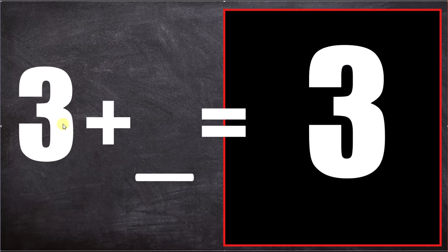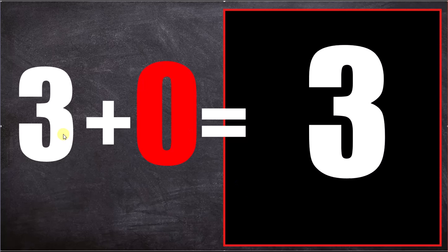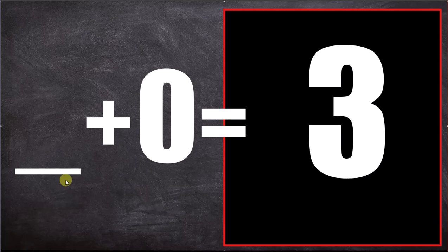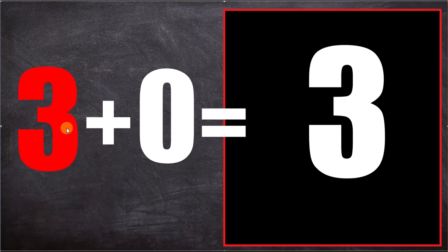Three plus what equals three? Zero. Three plus zero equals three. What plus zero equals three? Three. Three plus zero equals three.